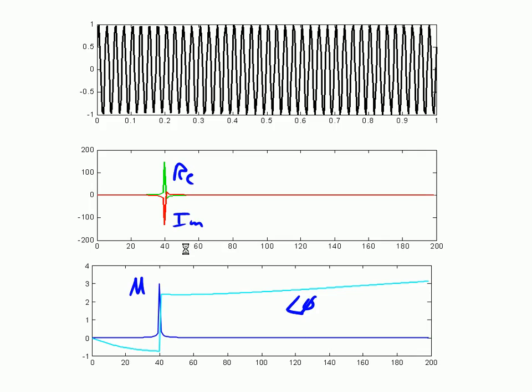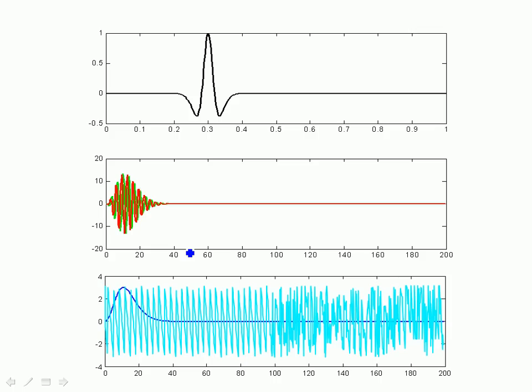We can look at more complicated functions, of course. Here's a function called a double Gaussian. So if f(t) has this type of shape, the real and imaginary parts are shown in this graph right here. Again, real is green, imaginary is red. And the magnitude is shown in dark blue, the phase in light blue. And you can see that using computers, you can really look at the frequency components of practically any type of system using the Fourier transform.